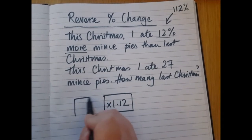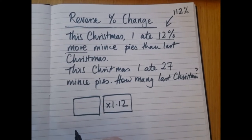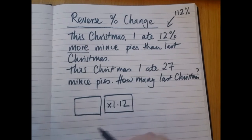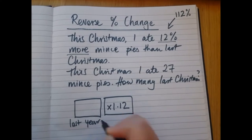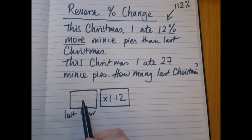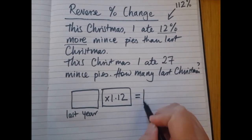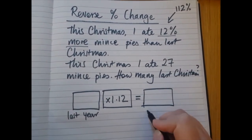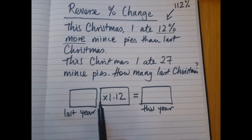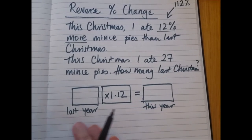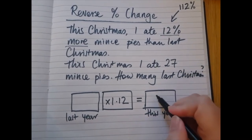In our equation, we always have last year's number — the earlier in time number. So last Christmas, how many mince pies I ate: if I times it by 1.12 I will get this year's number. Last year times the multiplier equals this year. The question tells you that this year's number was 27.